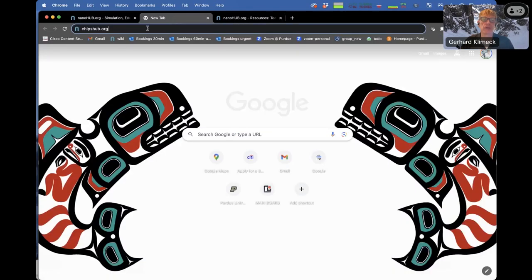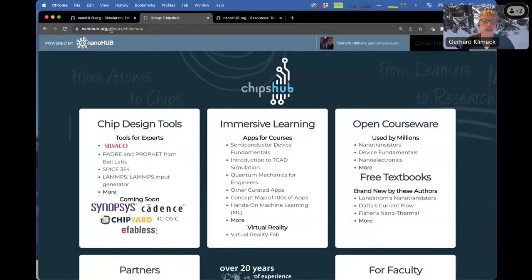We also inside Nanohub created ChipsHub. So you can go to ChipsHub.org. In there we list several of our courses that have been literally used by millions of people. We have free textbooks that are new, that are free to download. And these textbooks go with some of the courses that we have listed. We have full-fledged chip design tools and TCAD tools. We have Sylvaco TCAD installed and we're in the process of installing Cadence and Synopsys and open source pipelines for chip design.